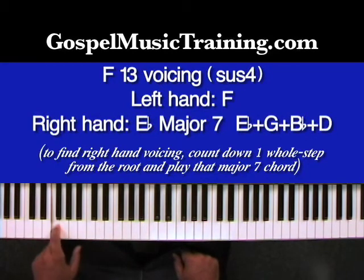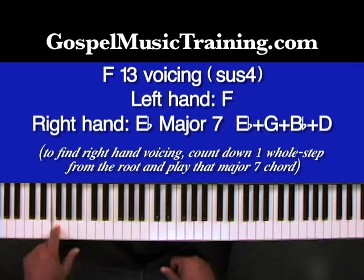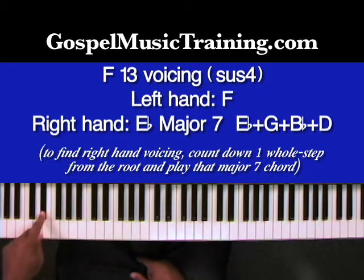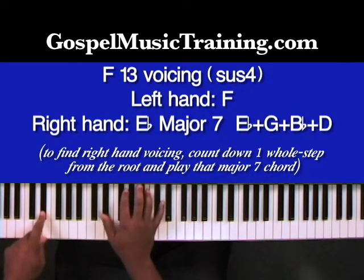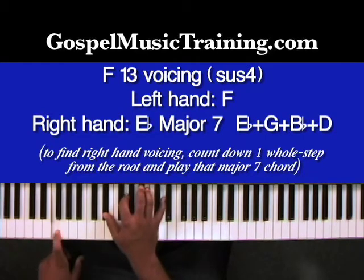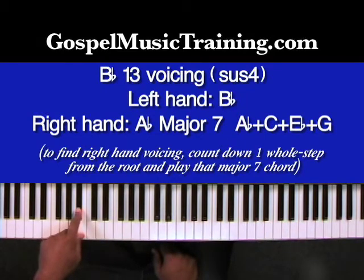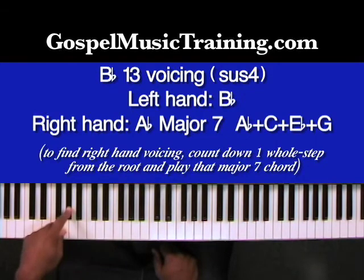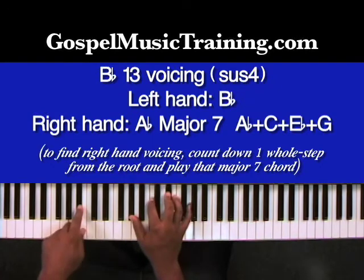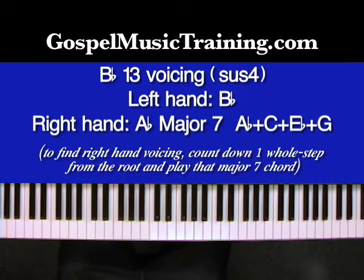Let's look at it over F. Same concept — first find the root, that's F of course, and then identify the note that's a whole step down from that, which is Eb. And then you would play the Eb major 7th over that F. Let's do it over Bb. Same concept. Bb is our root. Identify the note that's a whole step down from it — Ab is that note — and then we would play that Ab major 7th. So that's how you find really any 13th chord quickly.